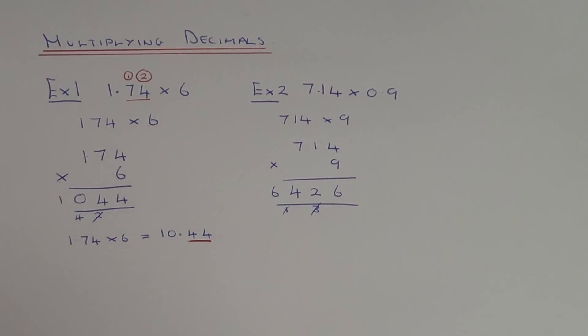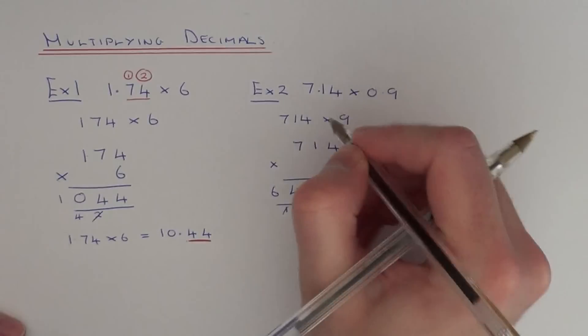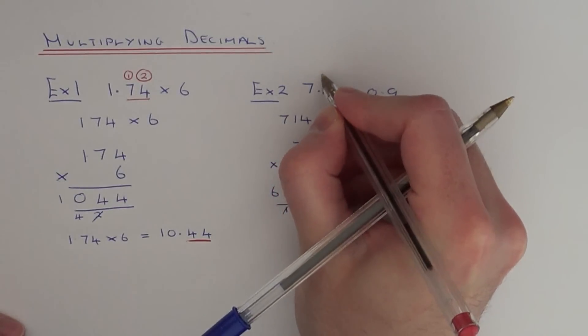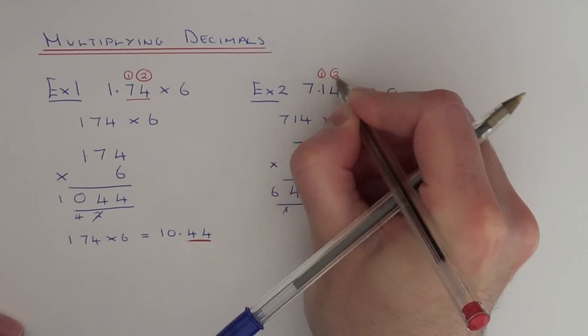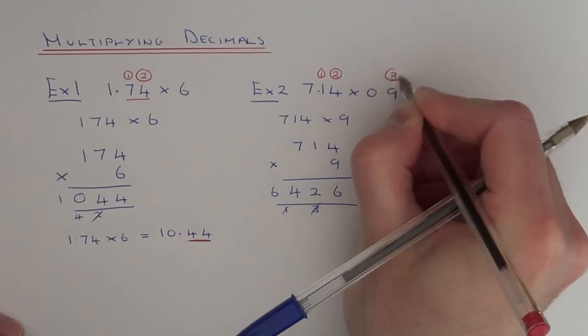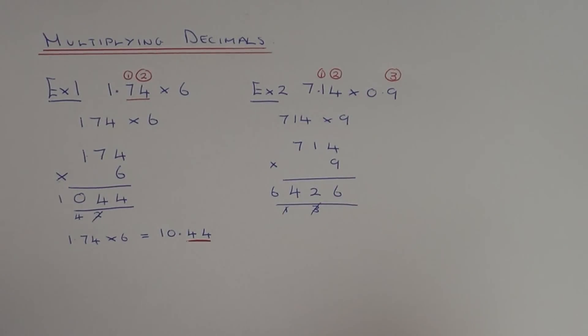So again, we just need to insert the decimal point now. Count how many numbers you've got after the decimal point in the question. We've got one number here, two numbers, and another number on this one. So we've got three numbers all together after the decimal point.